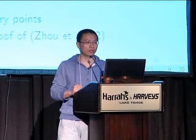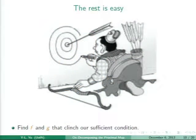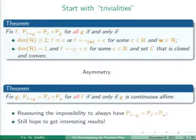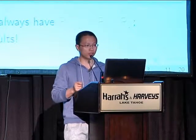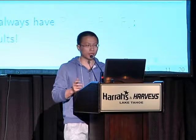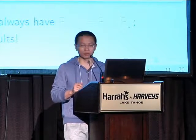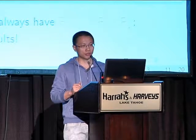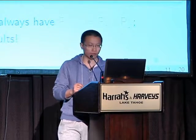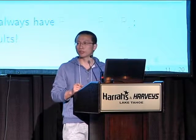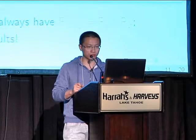Once we have the sufficient condition, all we need is to find functions F and G that satisfy it to obtain the proxy decomposition. A trivial result shows that if we fix one of the functions and require decomposition to hold for all possible choices of the other, we only get trivial solutions — a constant function for F, or a continuous linear function for G. This confirms the impossibility of proxy decomposition in general.